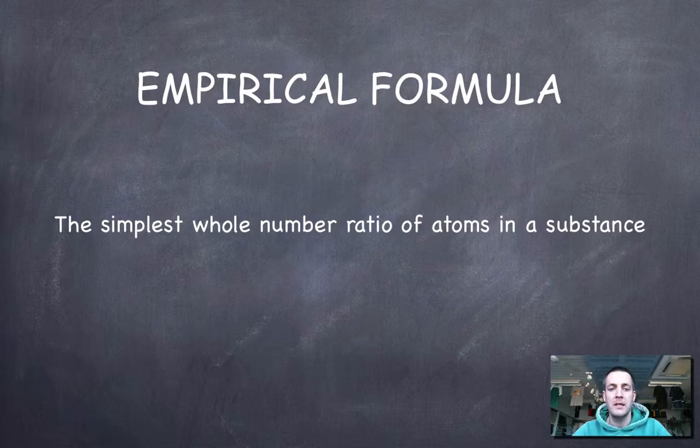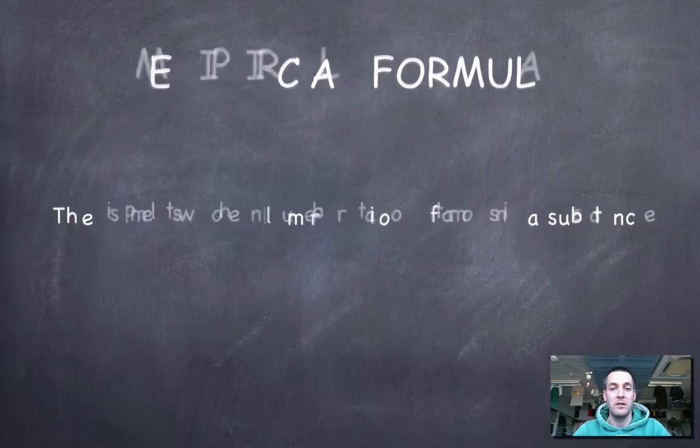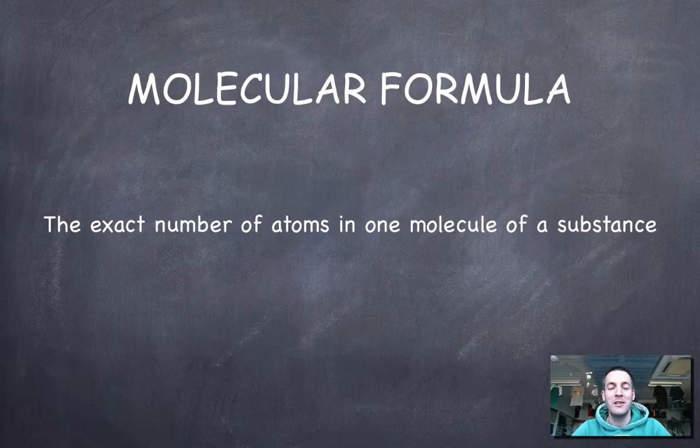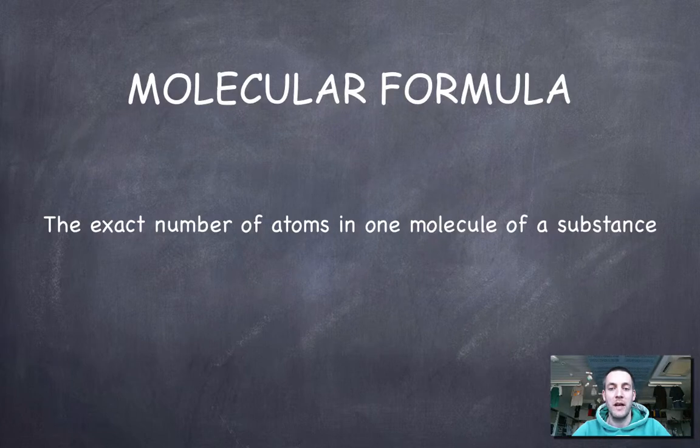The empirical formula is the simplest whole number ratio of atoms in a substance. I'm actually just going to read these out even though it seems a bit daft. These are really important definitions to remember. The molecular formula is the exact number of atoms in one molecule of a substance.